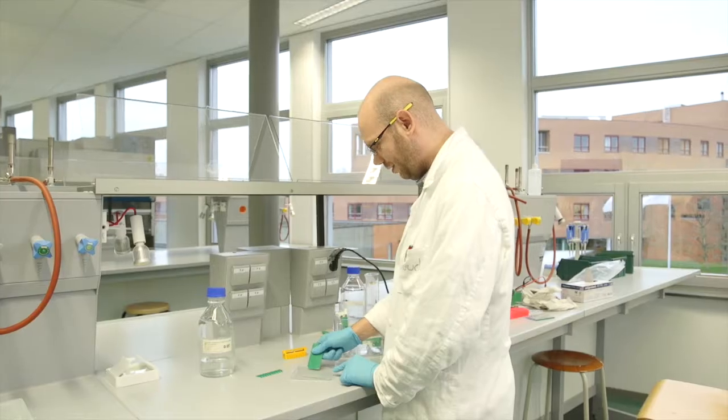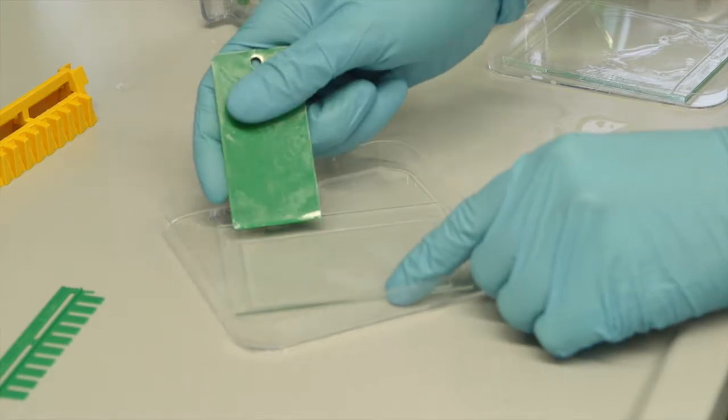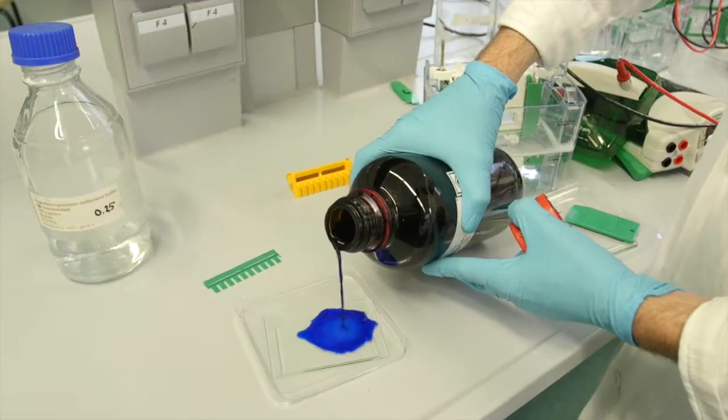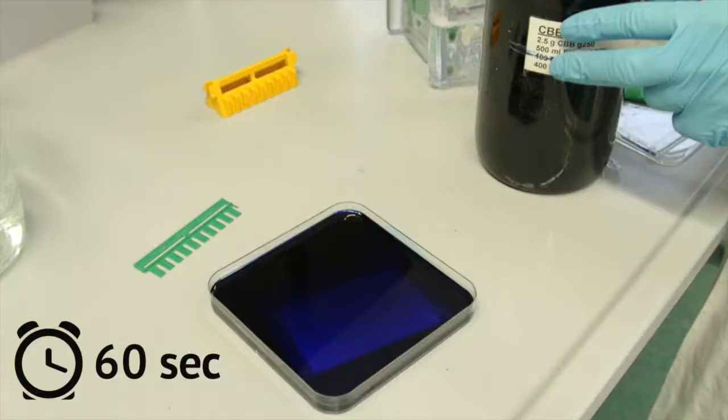Remove the short plate with the green cutting device and put the gel in a large petri dish. It is also possible to remove the stacking gel with the tool. Pour in CBB staining solution so that the gel is completely immersed.